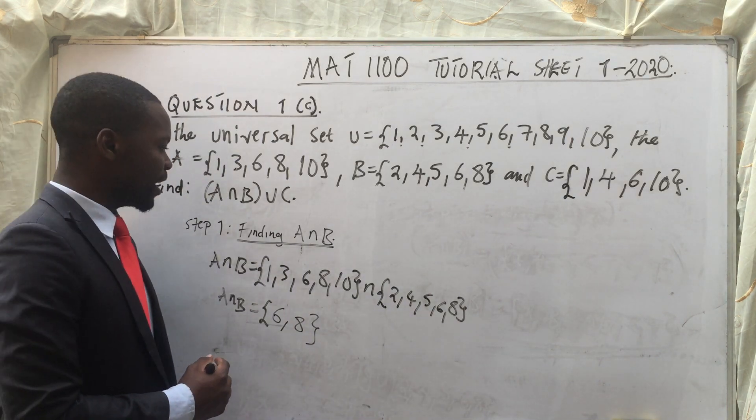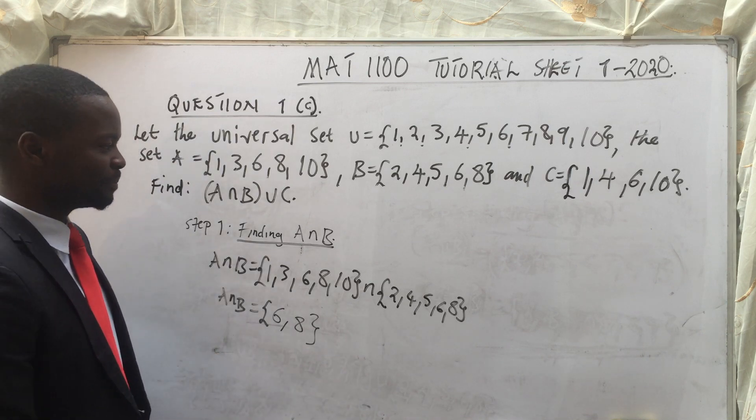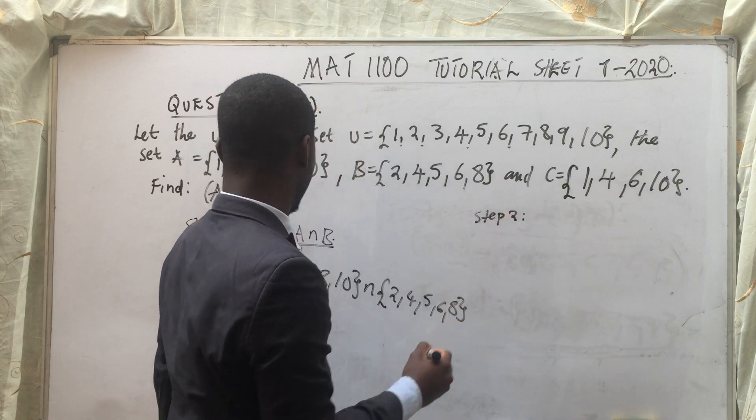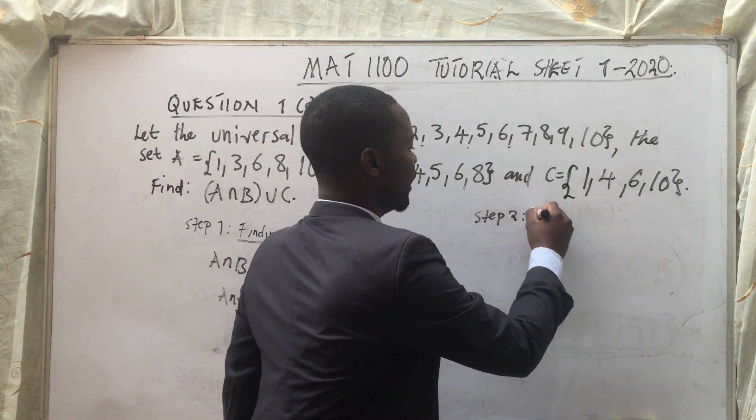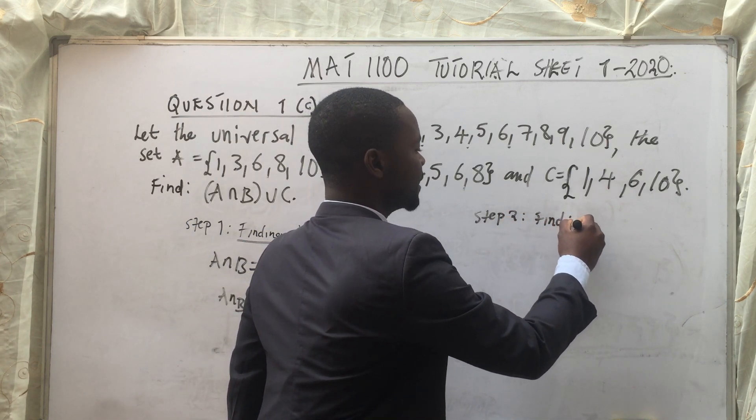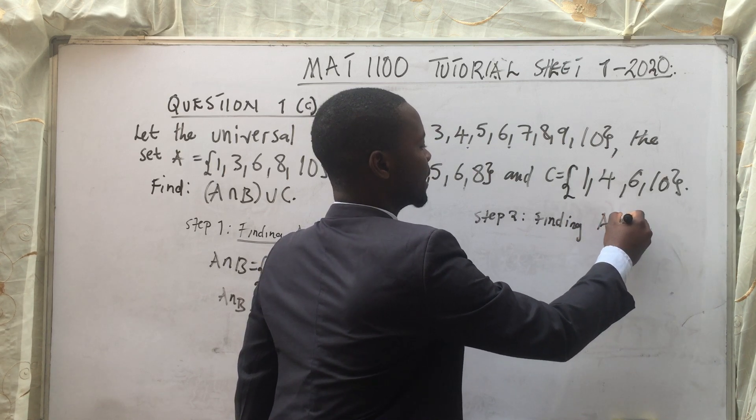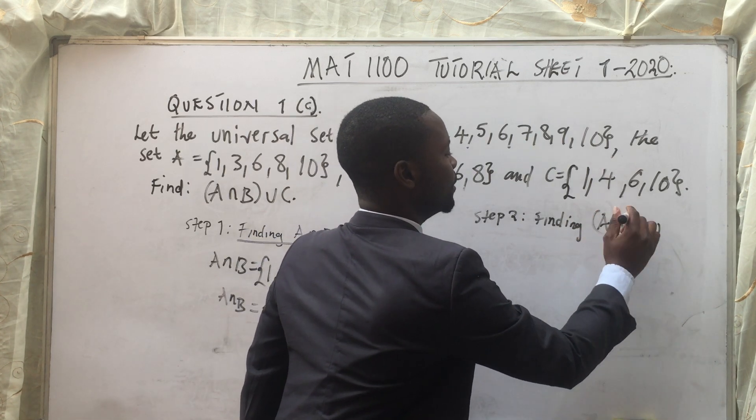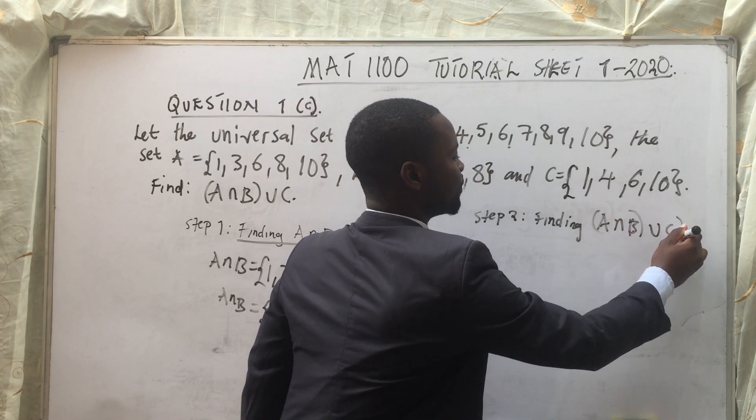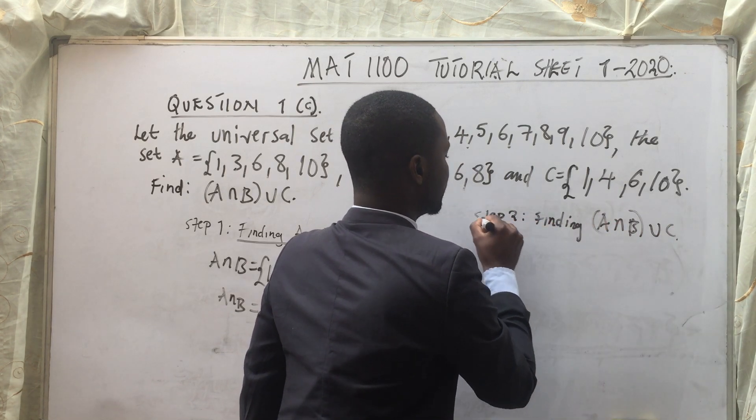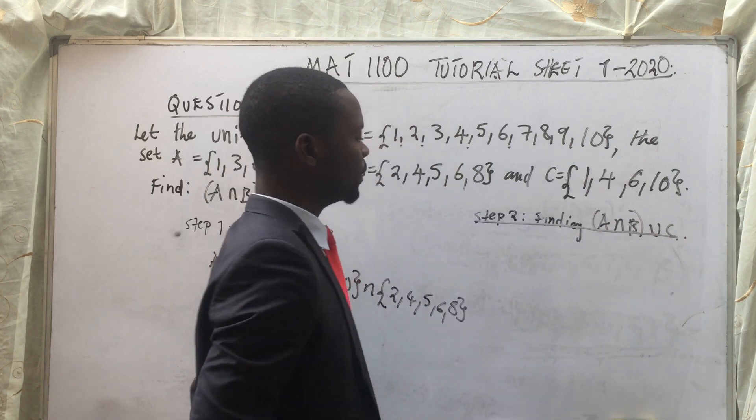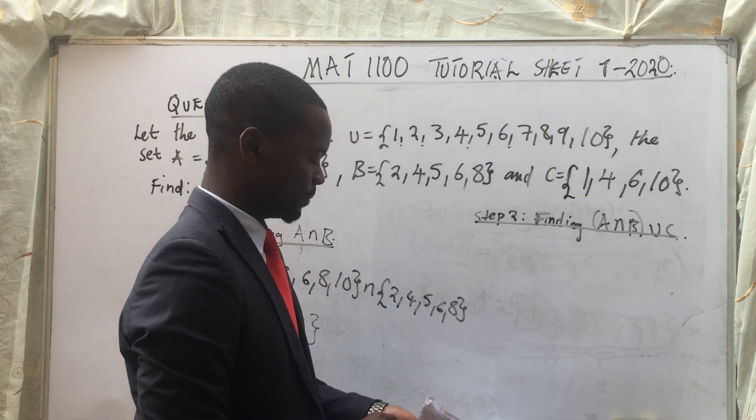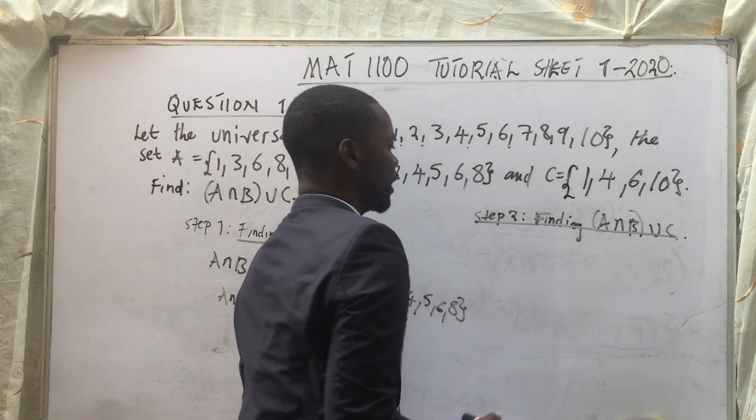Step 2. I think step 2 is the last step. Step 2 is saying, step 2 is finding A intersection B, union C. So this is our step 2. Alright.